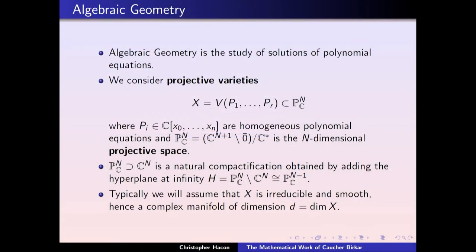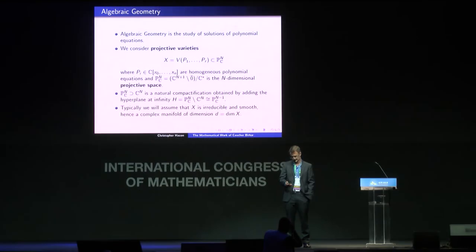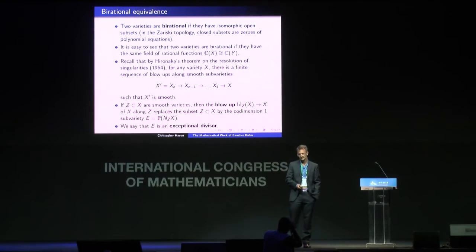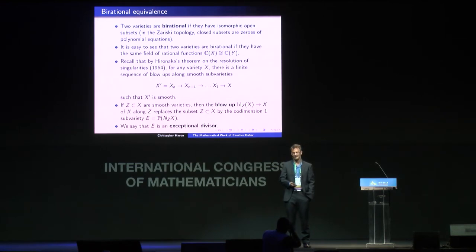Typically, we would like to assume that the varieties, the geometric objects we study, are irreducible and smooth, so they don't break up into two other algebraic objects. And if they're smooth, then we can regard them as complex manifolds of some dimension, say D. Now we come to the next term that describes Caucher's work: birational algebraic geometry.